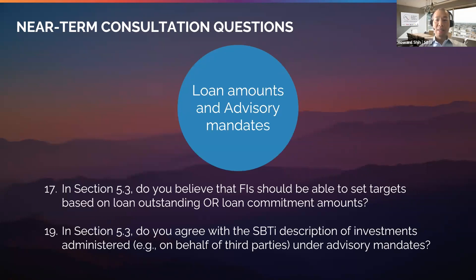The next two consultation survey questions ask if you agree with the following two clarifications. First, targets can be set on loan outstanding or loan commitment amounts. While PCAF uses loan outstandings, several banks have asked whether they can use loan commitment amounts since they are less volatile. Since we don't necessarily see one as less ambitious than the other, we are proposing some flexibility on this. Second, based on our influence principle, investments managed on behalf of third parties under discretionary mandates are required, while investments administered under advisory or execution-only mandates are optional. If an FI can make investment decisions, or has some influence over fund or security selection, and/or can vote for the securities in a portfolio, then this would be considered a discretionary mandate and must be included in the target boundary.